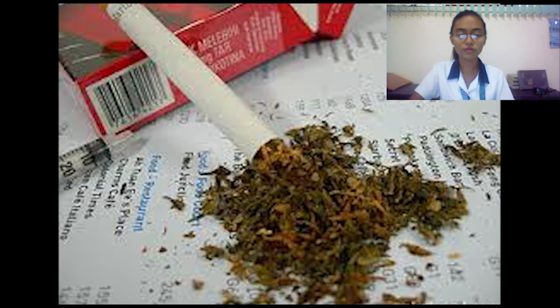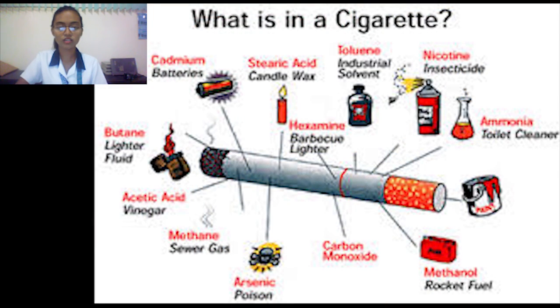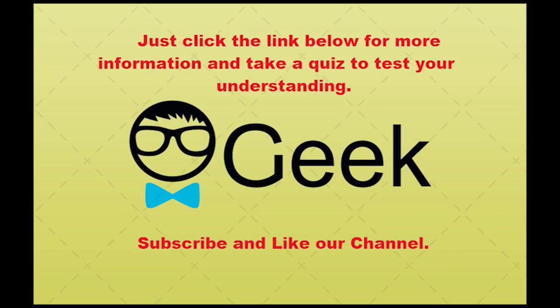Tobacco smoking is very dangerous to health. Cigarettes contain harmful chemicals such as nicotine and carbon monoxide. Nicotine affects the heart and blood vessels, and carbon monoxide reduces the ability of hemoglobin in the red blood cells to carry oxygen to all parts of the body. And that's it — the respiratory system. See you in the next episode. Goodbye!